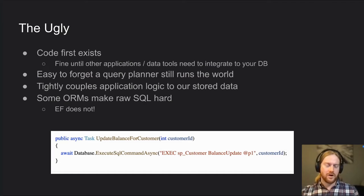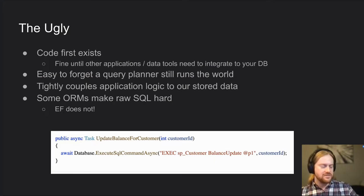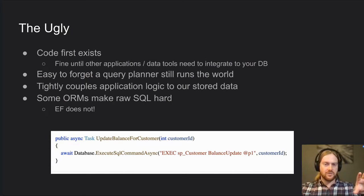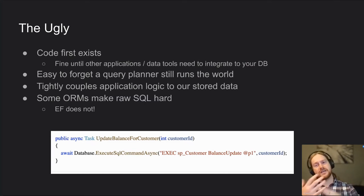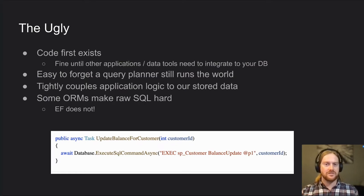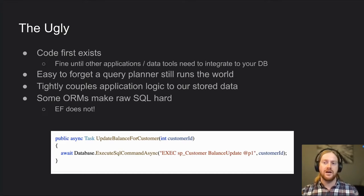Another problem is that ORMs tightly couple application logic to stored data. This hurts your migration strategies. If you need to migrate from table A to table B, you have to change the code and the database at the same time. The better approach is a four-pass zero-downtime strategy: create the new table, migrate the data, update code to know about both objects, then deprecate the old one. When using ORMs, changing a column type, column name, or foreign key constraint gets very tricky.